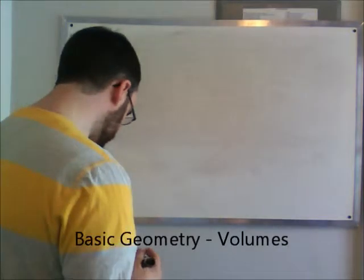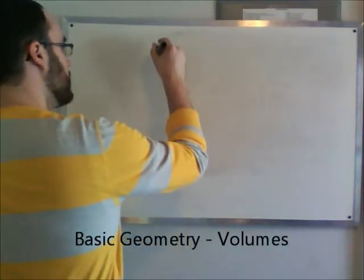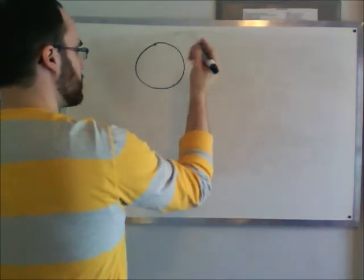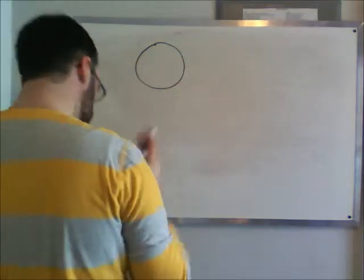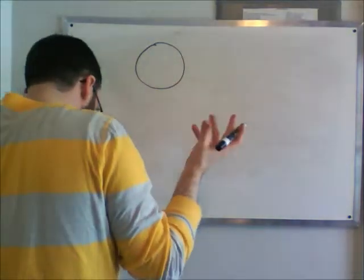Volumes of certain shapes is what we're going to be talking about right now, and we'll start with a sphere. A sphere is basically a ball, like a baseball or something like that. Picture it as an orange.